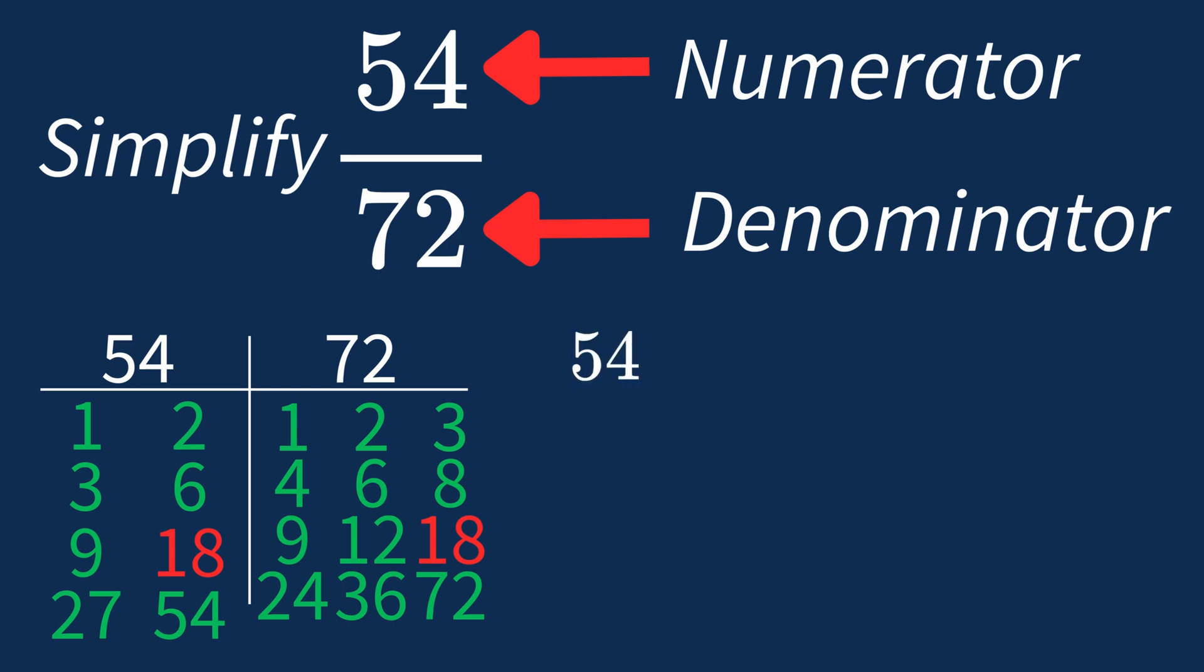Dividing the numerator, 54 by 18, gives us 3. Dividing the denominator, 72 by 18, gives us 4. So after dividing,